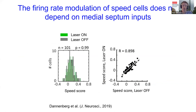To answer this, we compared the distribution of speed scores between inhibition and baseline conditions. The speed score measures the correlation between firing rate and running speed. We found that the modulation of speed cells' firing rates remained unchanged at both the population and single-cell levels. These data show that the firing rate modulation of entorhinal speed cells does not depend on medial septum inputs, indicating that the brainstem pathway via the medial septum may not be the primary influence on the speed signal by firing rate.